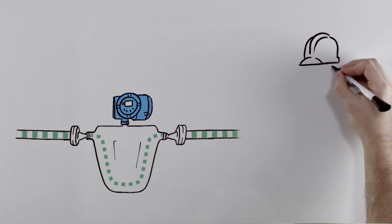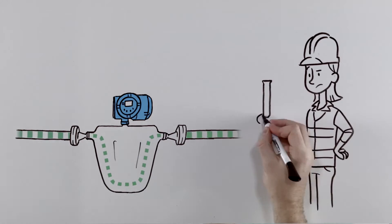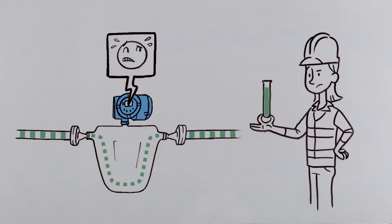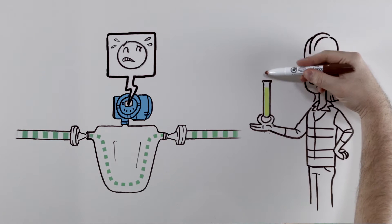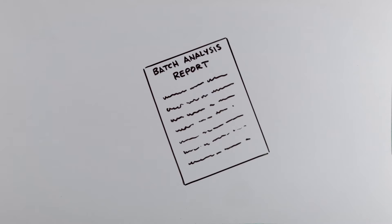Tina's challenge? Whenever an upset or off-spec batch occurs, the process engineers often blame the measurement device, or in Tina's case, the Coriolis flow meter. Tina knows that the meters aren't typically to blame, but she can't always prove it.